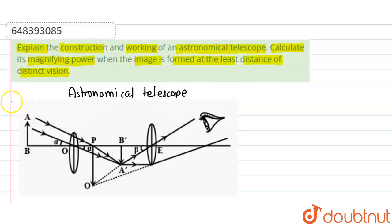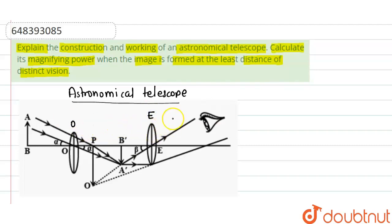These objects are very distant, so the light coming from them will be parallel to each other — the light rays will be parallel. For the astronomical telescope, we use two lenses. The first is the objective lens, and the second is the eyepiece lens. The lens close to the eye is called the eyepiece lens, and the lens close to the object is called the objective lens. When light comes from distant astronomical objects, the light rays will be parallel to each other.